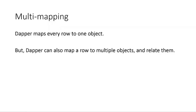Now let's get into more complex stuff: multi-mapping and joining. Not all domains are just simple flat tables. Dapper maps every row in a result set to an object, but with multi-mapping you can tell Dapper to split that row into multiple parts and map each part to a different type. You then specify how those types are related. It still returns one object per row, but now you can create relationships between those objects.